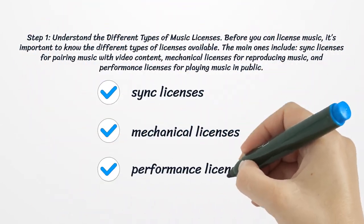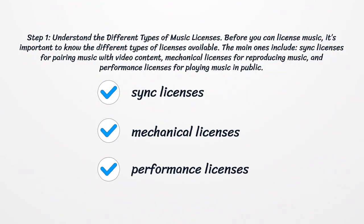Step 1: Understand the different types of music licenses. Before you can license music, it's important to know the different types of licenses available. The main ones include sync licenses for pairing music with video content, mechanical licenses for reproducing music, and performance licenses for playing music in public.